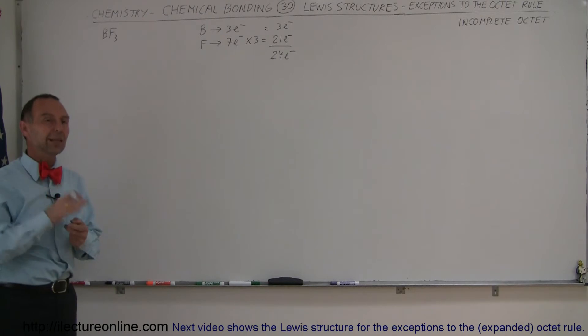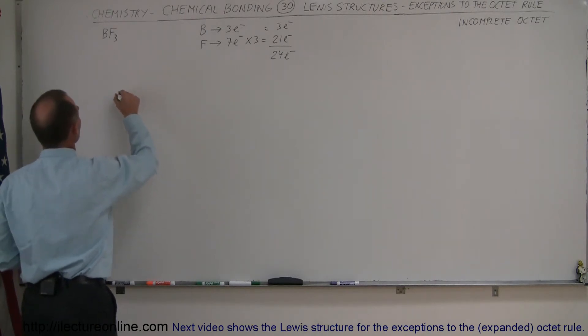Boron is the least electronegative, so that would be the central atom, and the fluorine atoms will cluster around it. We'll probably end up with something that looks like this: boron with three fluorines.